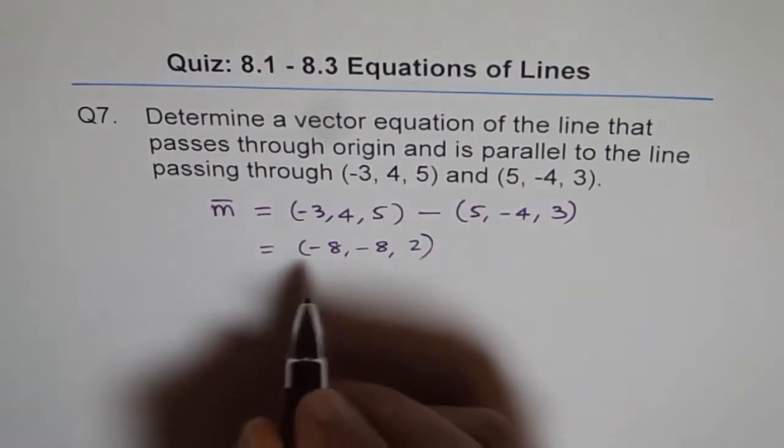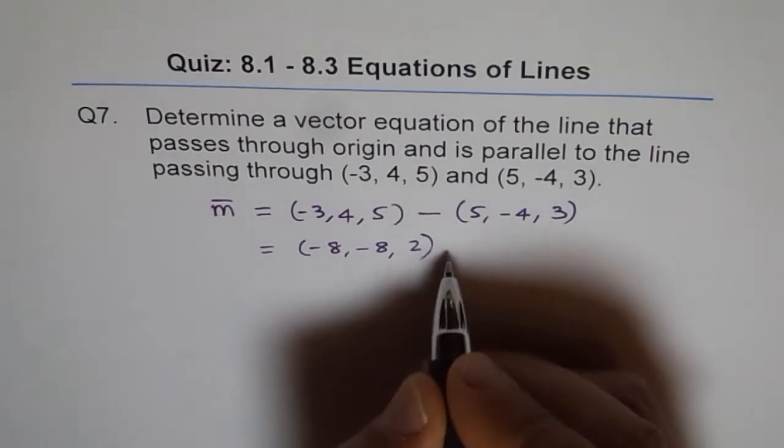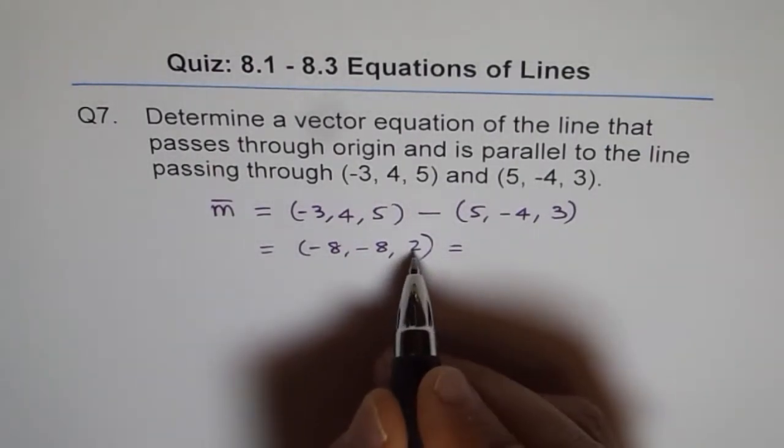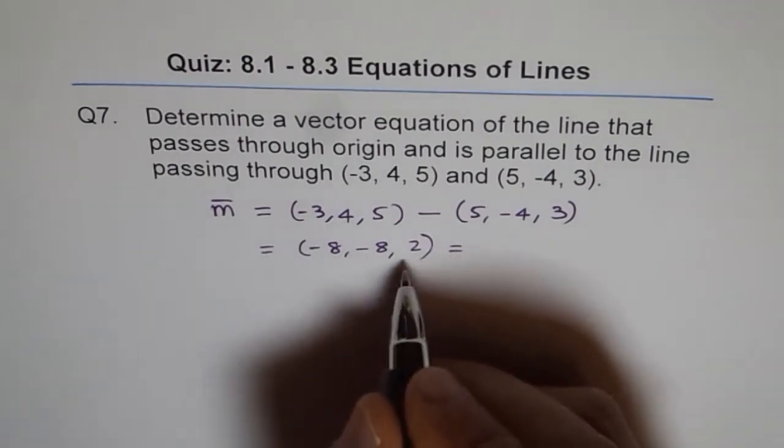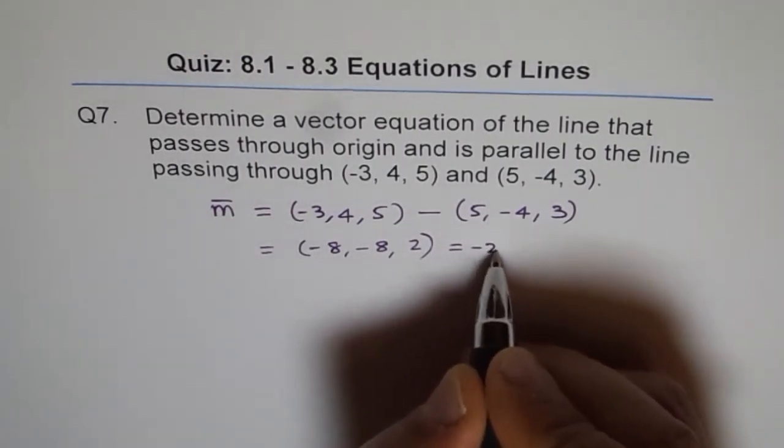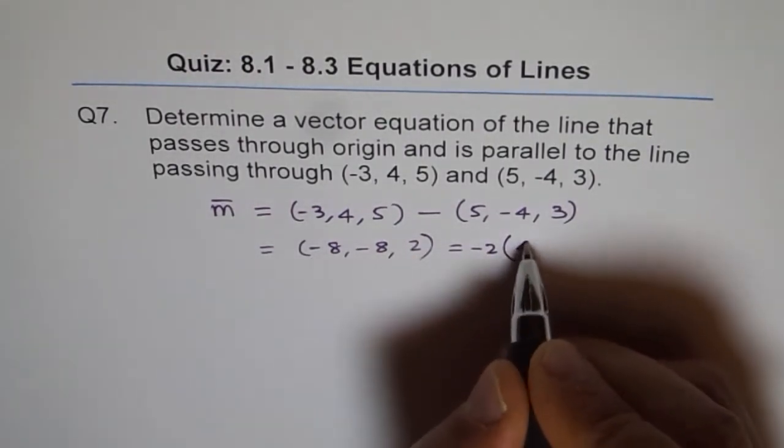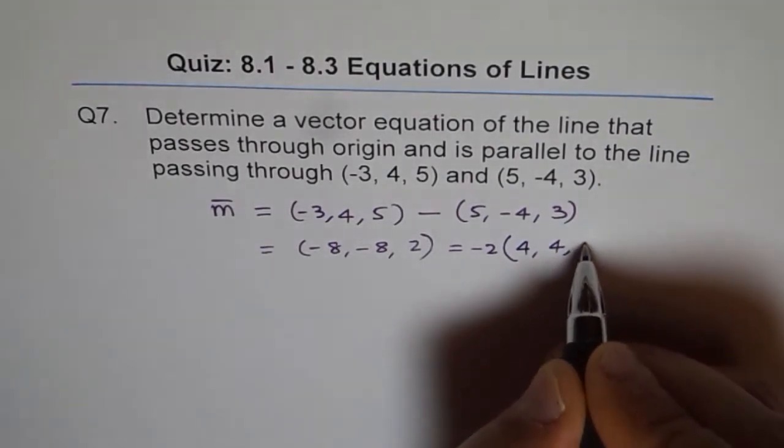We can actually simplify this. If I simplify, take 2 outside - rather, minus 2 is a better thing to take - then it would be (4, 4, 1).